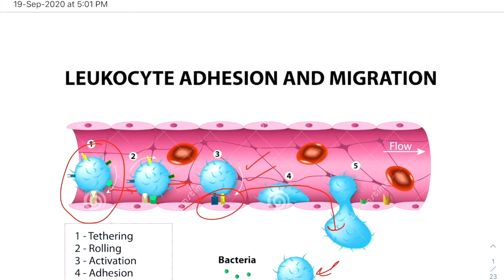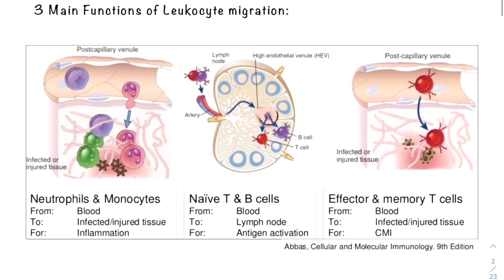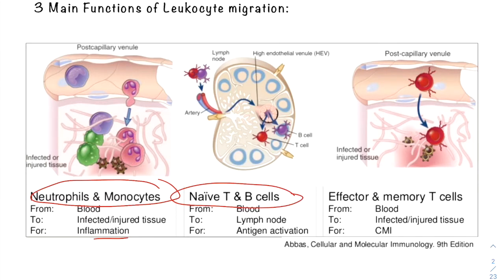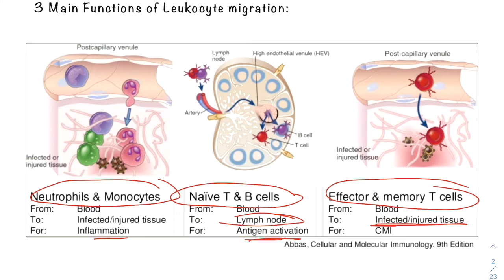In the leukocyte adhesion cascade, leukocytes adhere to the vessel wall, roll along it to the endothelial borders, get activated, traverse the endothelium and sub-endothelial basement membrane, then migrate to the site of infection. There are three main leukocyte migration types: first, migration of neutrophils and monocytes to infected or inflamed tissue; second, migration of naive T and B cells to lymph nodes for antigen activation; third, migration of effector/memory cells to infected or injured sites for cell-mediated immunity.